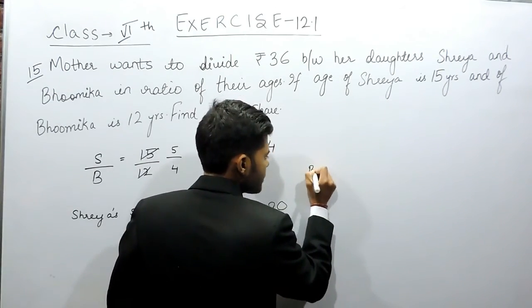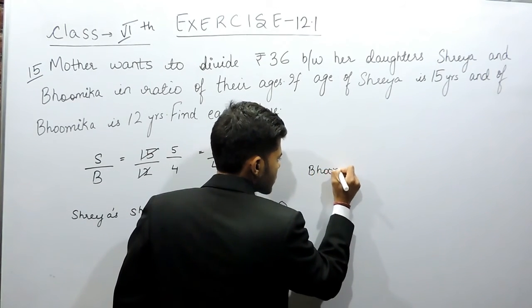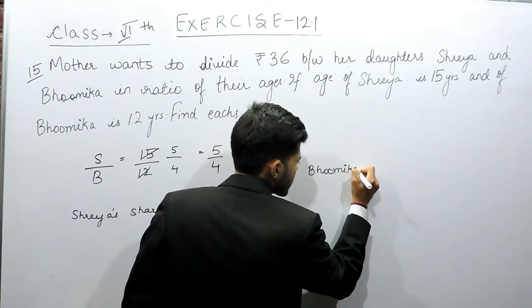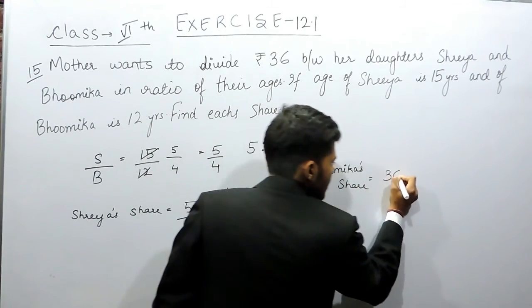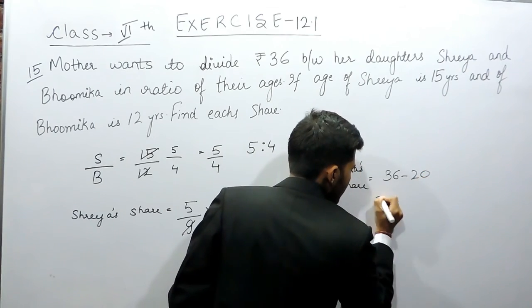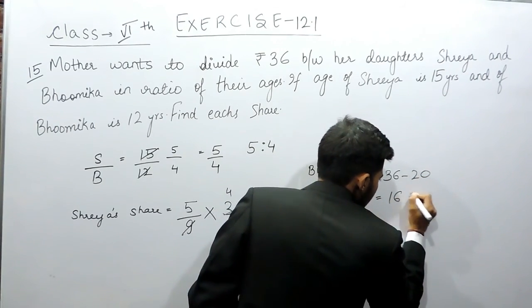And now Bhumika's share will be equals to 36 minus 20 rupees, that will be equals to 16 rupees.